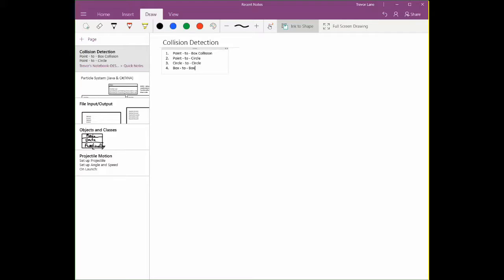So let's start off with the point to box collision detection. So point to box basically means, so number one, if we have a box.